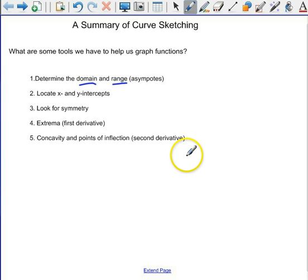You can locate x and y-intercepts by plugging in 0 for x, solving for y, and plugging in 0 for y, solving for x. You can look for symmetry. You can use the first derivative to locate extrema, and like I said, you can use the second derivative to figure out concavity and points of inflection.